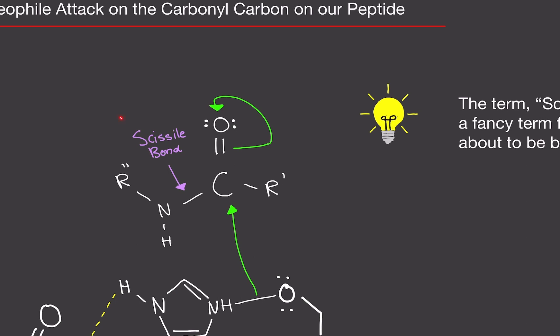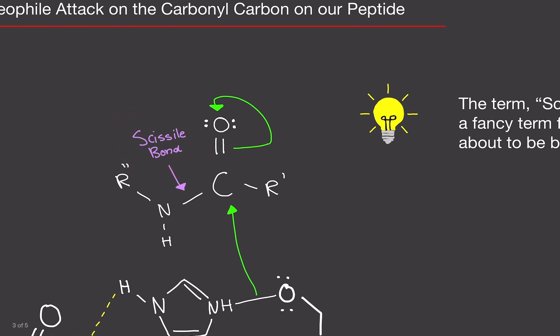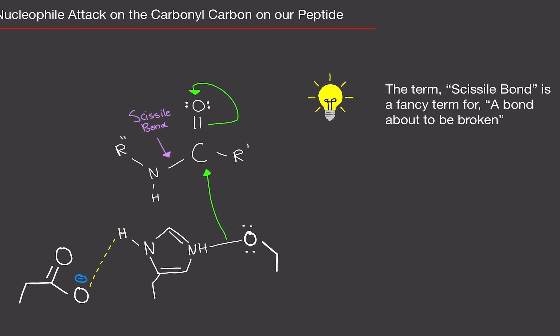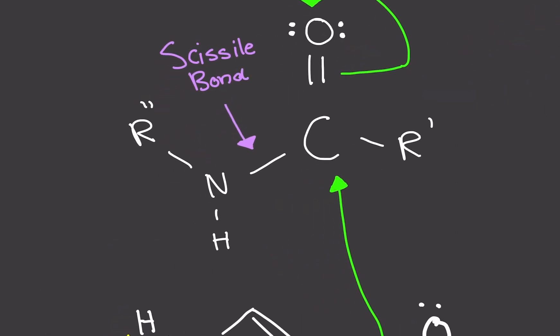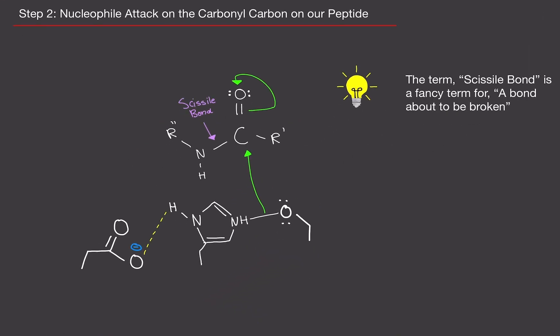You'll probably notice what is this scissile bond here? The scissile bond is just a fancy term of saying a bond about to break. That's it. That's what scissile bond means. It just means that we're going to break this bond in a future step. In the next step, we're going to break that bond. That's what it means. So that's exactly what we're going to do.